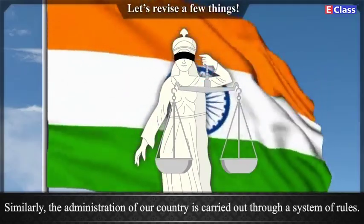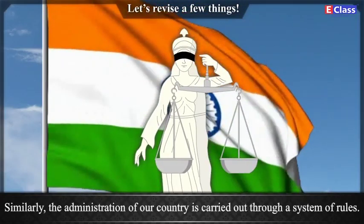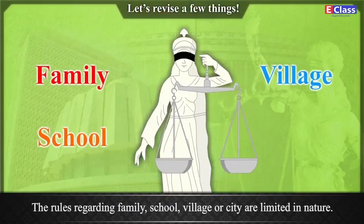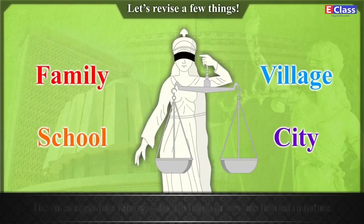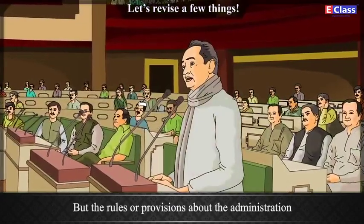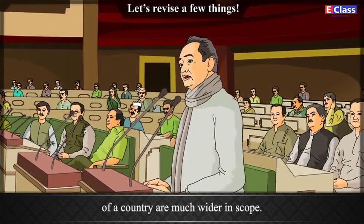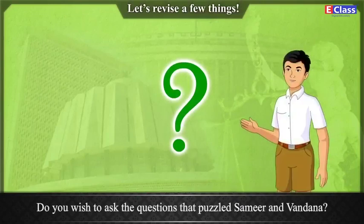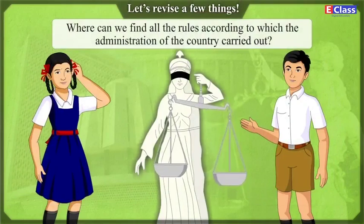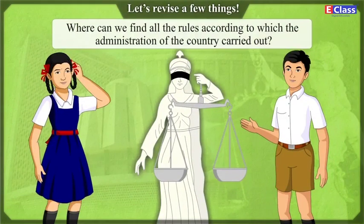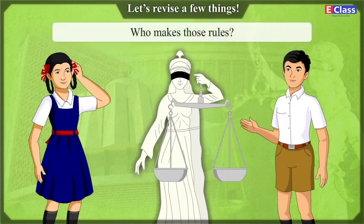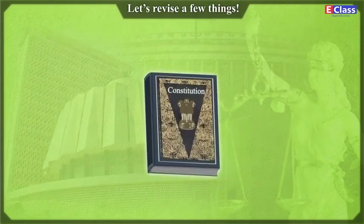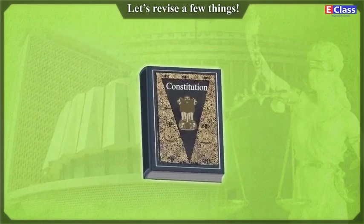Similarly, the administration of our country is carried out through a system of rules. The rules regarding family, school, village or city are limited in nature. But the rules or provisions about the administration of a country are much wider in scope. Do you wish to ask the questions that puzzled Samir and Vandana? Where can we find all the rules according to which the administration of the country is carried out? Who makes those rules? Is it binding on us to follow them? See whether you find the answers to these questions in the following text.